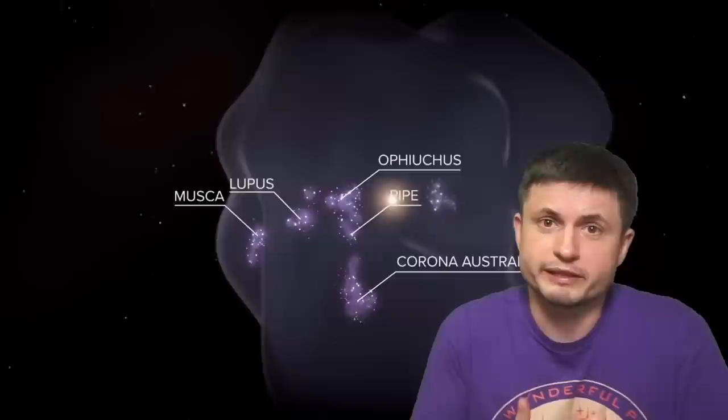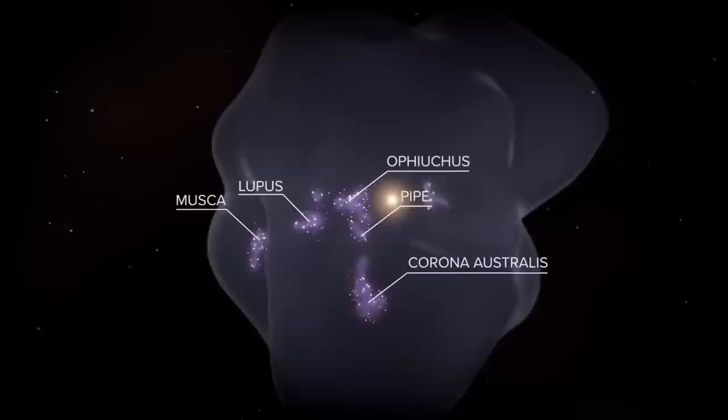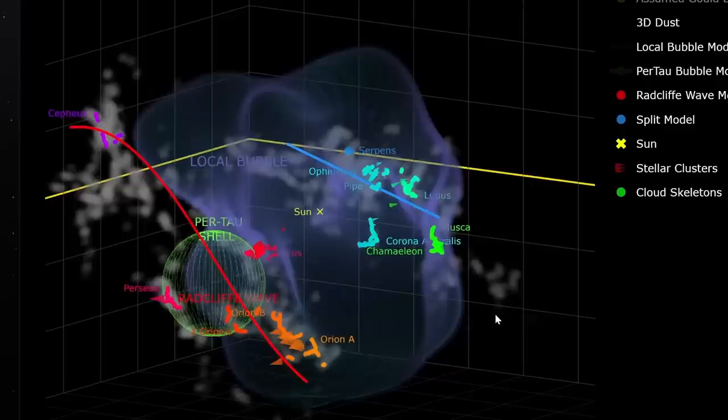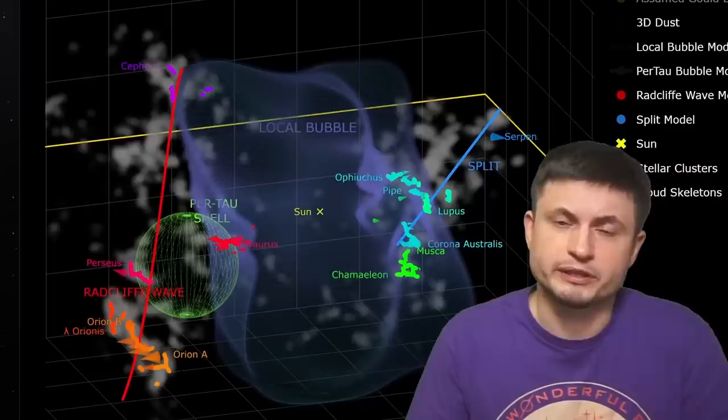Today we're going to be discussing a relatively recent discovery about the region we're sort of in the middle of, known as the Local Bubble. Something really exciting has been recently discovered about this region, helping scientists understand and to some extent map a lot of the nearby star formation regions, and also helping us understand how most galaxies, including the Milky Way, most likely evolve and create new stars — and more importantly helping us understand a little more about our own neighborhood and our place in it.